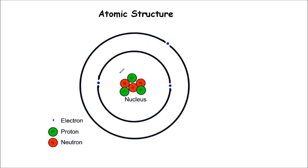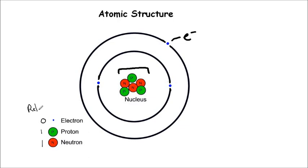In an atom you have a central part called the nucleus, which contains protons and neutrons as you can see here. Around the outside you've got the electrons. Protons and neutrons are quite big and so they have a relative mass of 1 each. Electrons are very tiny and so they have a relative mass of 0 in comparison — and that's quite important for this.